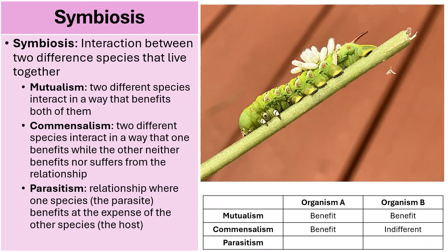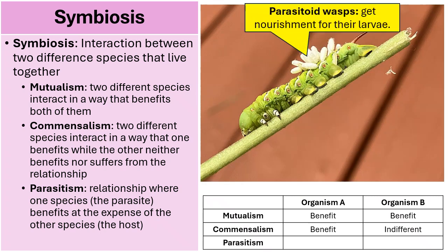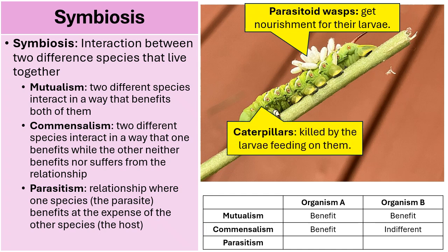Another interesting example of parasitism involves the larvae of parasitoid wasps. The wasp larvae get nourishment by consuming the caterpillar, and the caterpillar is killed by the larvae that are slowly feeding upon it. One benefits and the other is harmed.